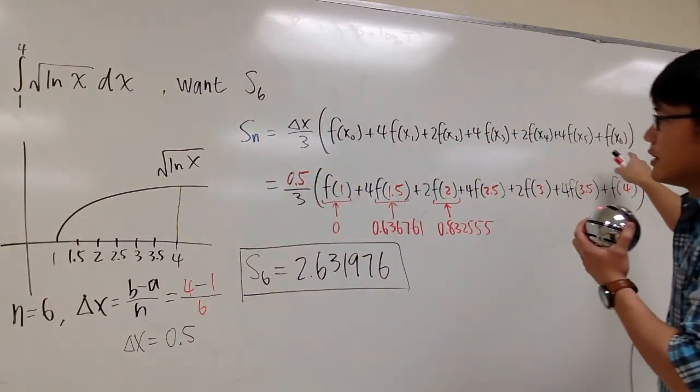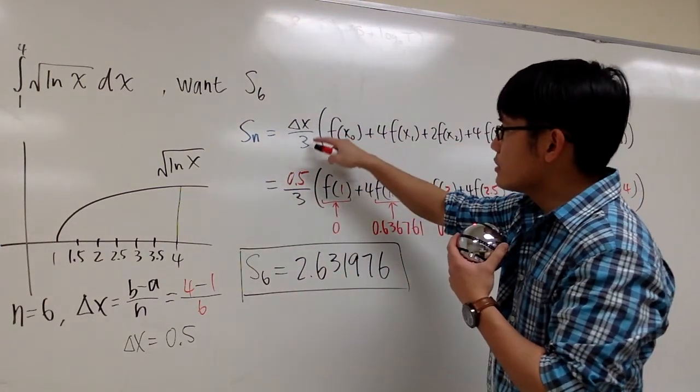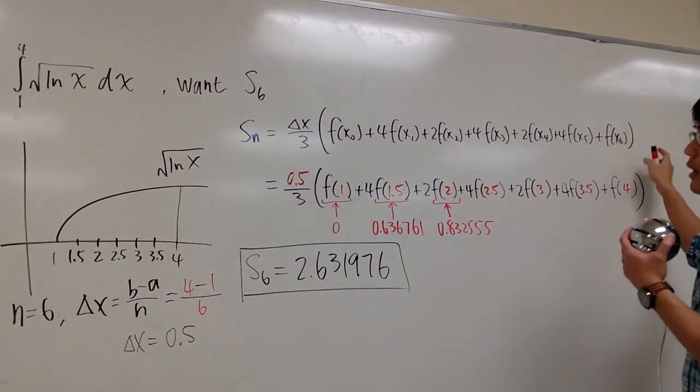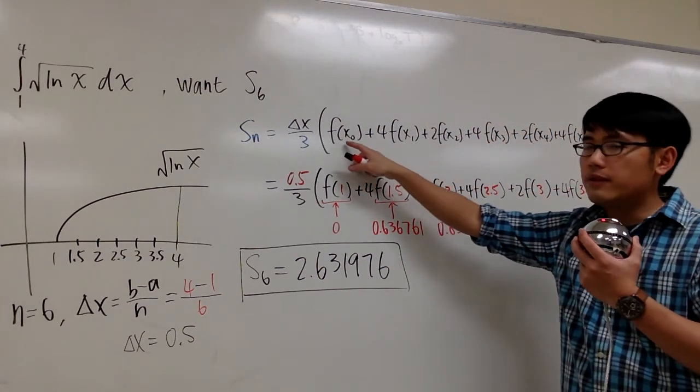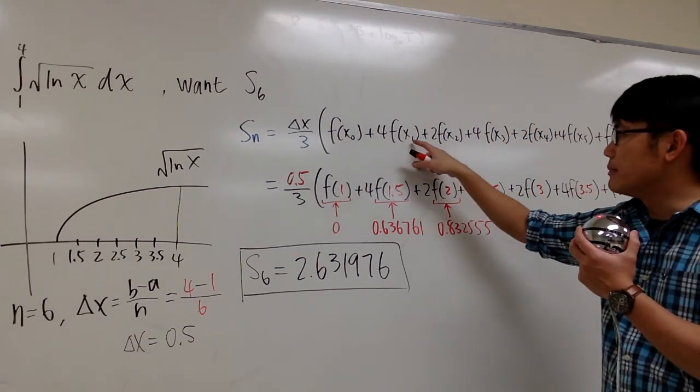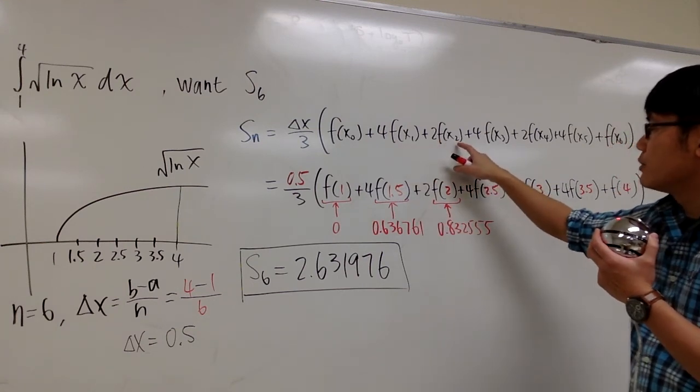However, here is the formula for Simpson's rule. It's delta x over 3 times the whole parentheses, f of x naught plus 4 times f of x1, and then 2 times f of x2.